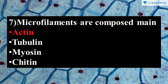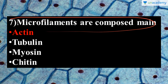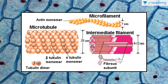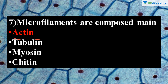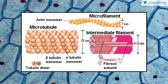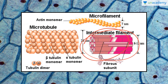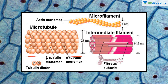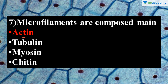The next question is: microfilaments are composed mainly of what? The answer is actin. Microfilaments are made of actin monomers, which combine to form microfilaments that can further associate to form intermediate filaments. This is a very important part of the muscle system, where actin plays a key role in the contraction and relaxation of muscles. So the answer is actin.